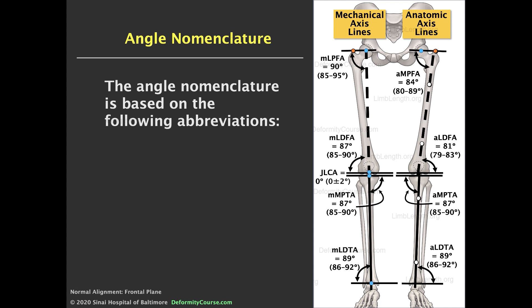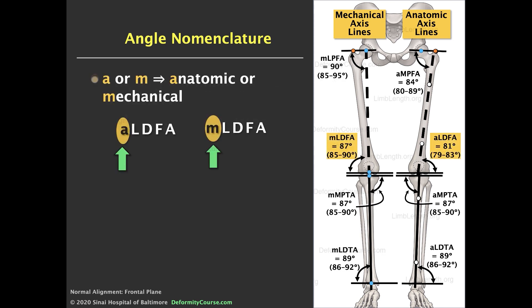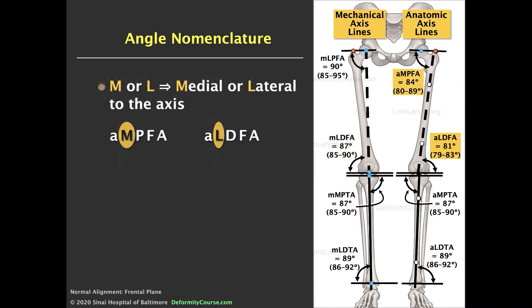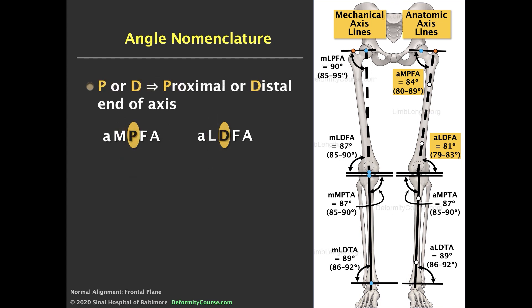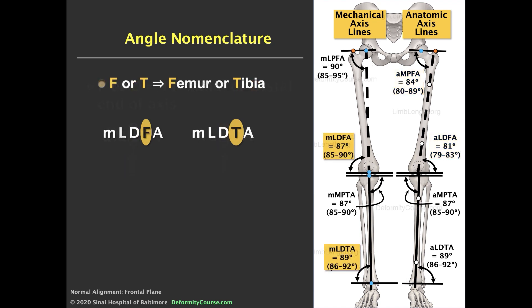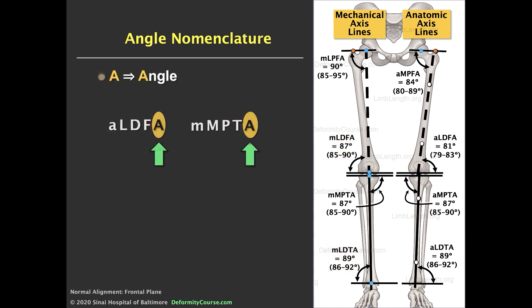We will now review the angle nomenclature. There is a convention established over the last several decades. The first letter will be an A or M indicating anatomic or mechanical. The second letter indicates whether it is a medial or lateral angle. The third letter gives orientation in space — proximal or distal. The fourth letter defines the bone segment. And A means angle.